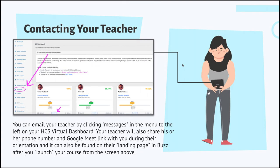For contacting your teacher, be sure to use the messages on the left-hand side of the HCS Virtual dashboard. Your teacher will also share their Google phone number and Google Meet link during their orientation, which can be found on the landing page in your Buzz course once you hit launch. To contact ESOL and special education teachers, the teacher's HCS email address should be used and will be provided to you by the teacher.